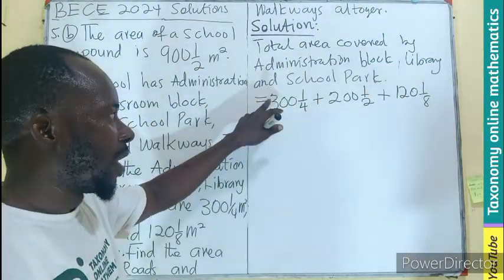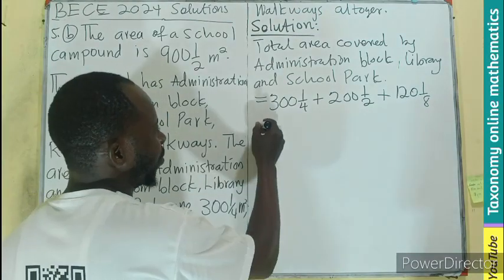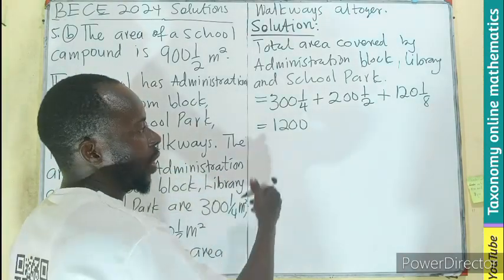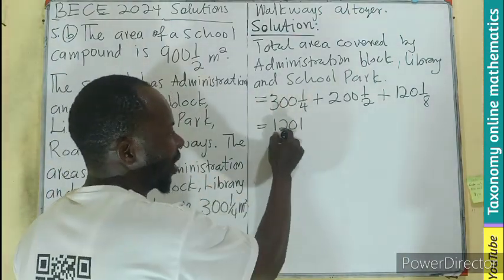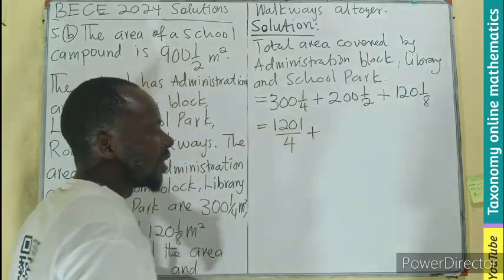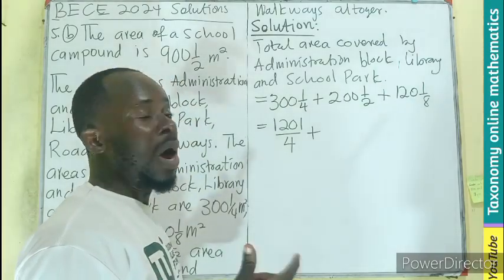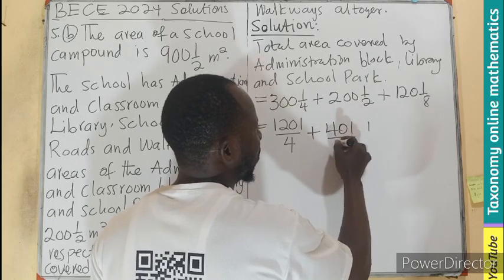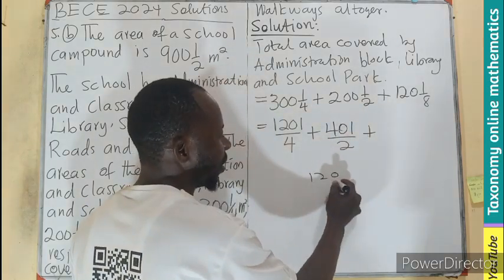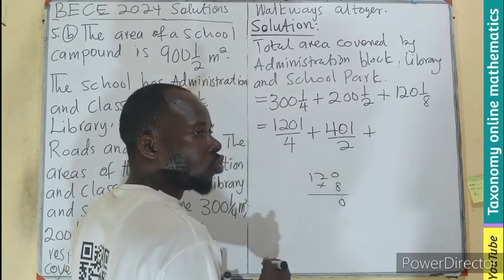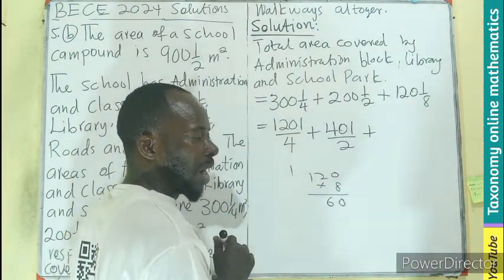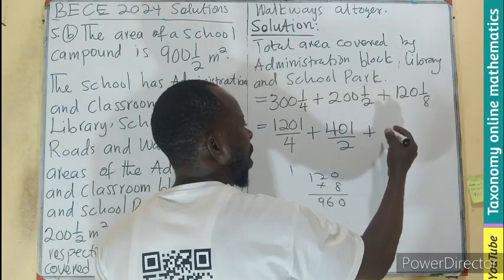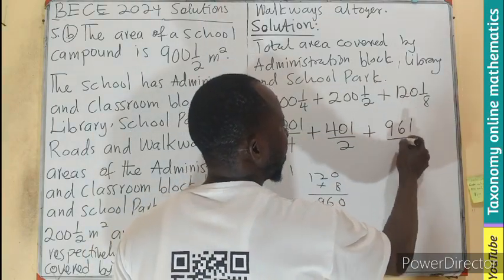So, 4 multiplied by 300 plus 1: 4 times 300 is 1,200, plus 1 gives 1,201, still divided by 4. Then 2 times 200 is 400, plus 1 gives 401, divided by 2. Then 8 times 120 is 960, plus 1 gives 961, divided by 8.